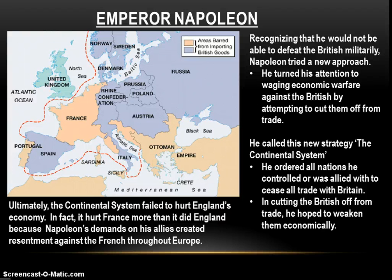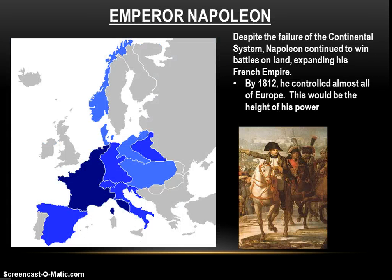Ultimately, the Continental System failed to hurt England's economy. With England's powerful navy, a trade blockade was really hard to enforce. In fact, it hurt France more than England, because Napoleon's European allies got a bitter taste in their mouth from him forcing them not to trade with certain individuals, turning people against Napoleon and hurting their economies as well. Despite the failure of the Continental System, Napoleon continued to win battles on land, expanding his French Empire. By 1812, he controlled almost all of Europe — but this would be the high watermark, the height of his power. From 1812 onward, it was all downhill.